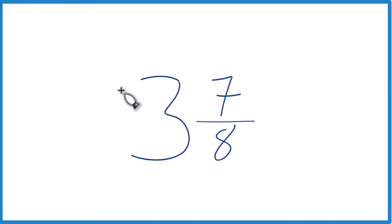You take 3, the whole number, multiply it by 8. 3 times 8 is 24, and then you add the numerator, 7. So 3 times 8 is 24. 24 plus 7, that's 31.